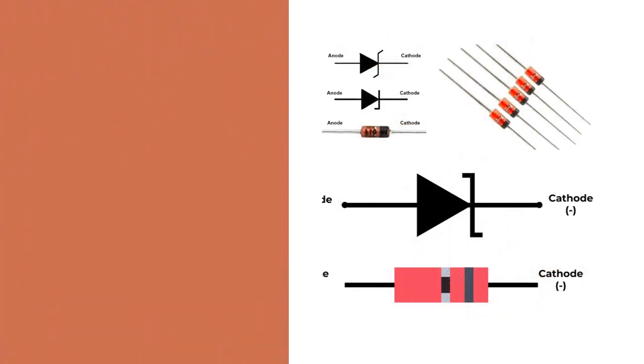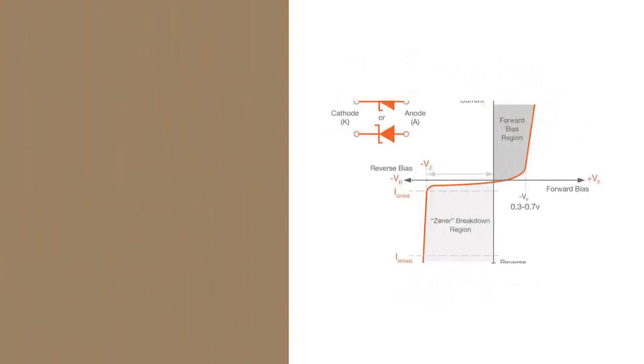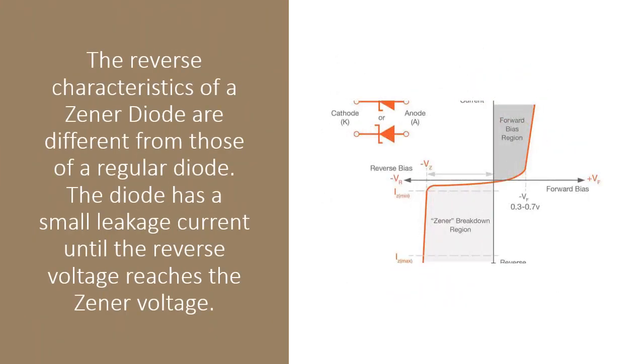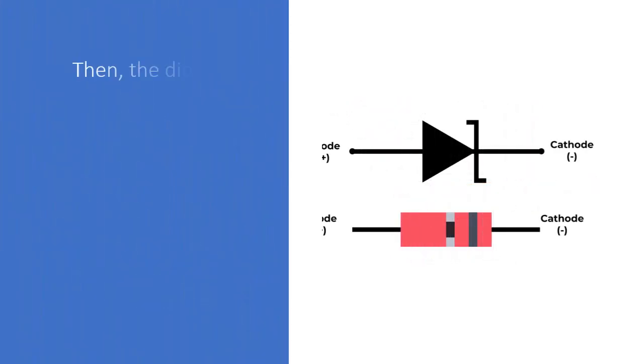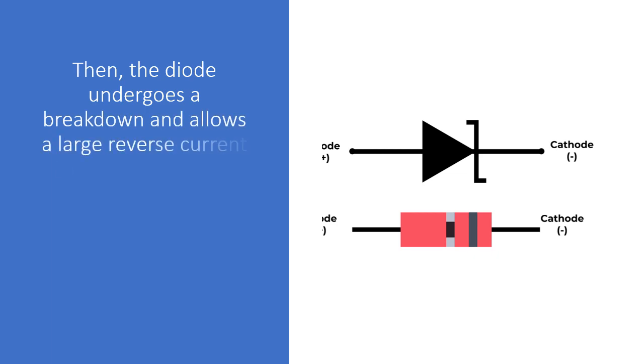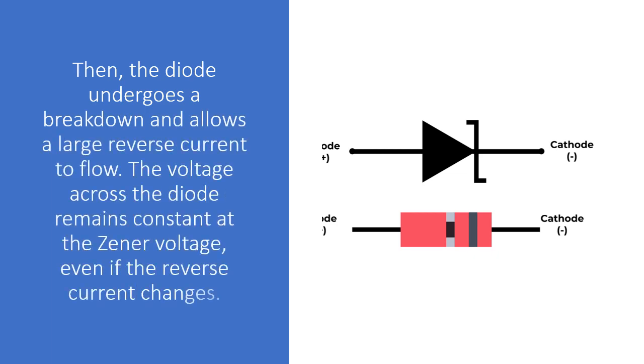The reverse characteristics of a Zener diode are different from those of a regular diode. The diode has a small leakage current until the reverse voltage reaches the Zener voltage. Then, the diode undergoes a breakdown and allows a large reverse current to flow. The voltage across the diode remains constant at the Zener voltage, even if the reverse current changes.